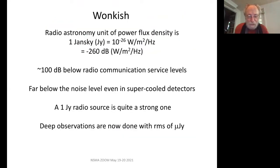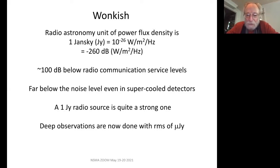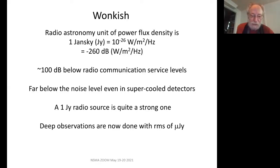I'm going to start out with some numbers, some hard numbers, a little bit wonkish — tell you a little bit about radio astronomy before getting into spectrum management. The radio astronomy unit of power flux density is a Jansky, and it's a very low level of power flux density. It's 100 dB below typical radio communication service levels, and it's even far below the noise levels in the best super-cooled detectors. A one Jansky radio source is actually quite a strong one these days, and deep observations are done with RMS values of micro-Janskys.